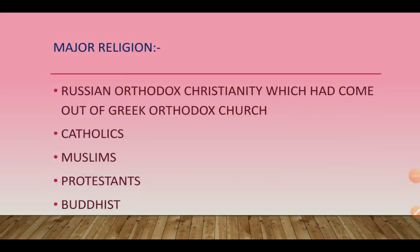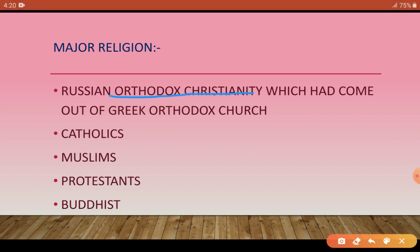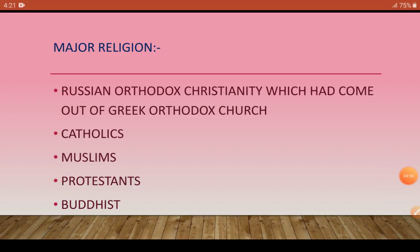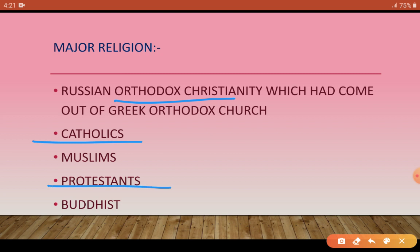At that time, Russia's major religion was Orthodox Christianity, which had come out of the Greek Orthodox Church. Besides that, Catholics, Muslims, Protestants, and Buddhists also lived there. Just as in India we have different religions and even within Hinduism different deities are worshipped, Christianity also has different types. Russia mainly followed Orthodox Christianity, but Catholics, Protestants, Muslims, and Buddhists were also present — the majority was Orthodox Christian but other religions also existed.